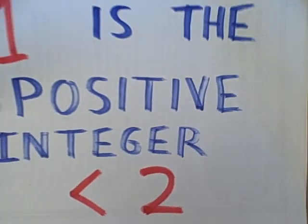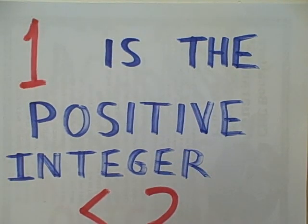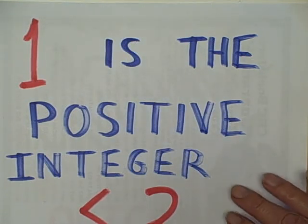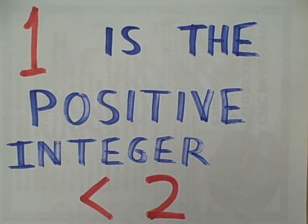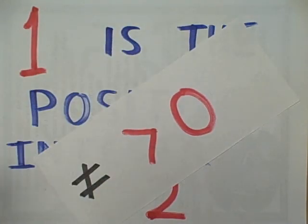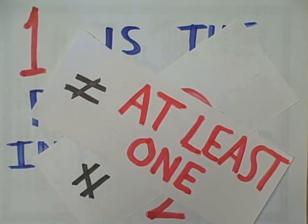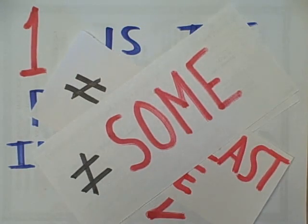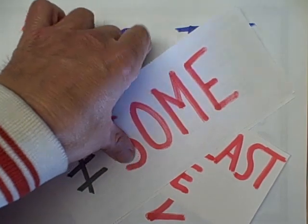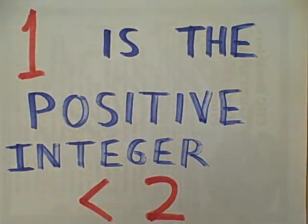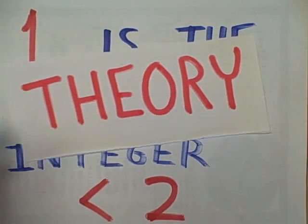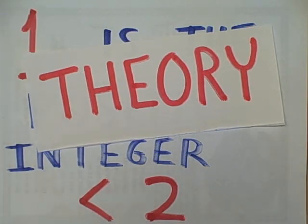Let's define the number one. One is the positive integer less than two. Notice what the definition of one is not — it's not any number greater than zero. One happens to be greater than zero, but not all numbers greater than zero are equal to one. One does not mean at least one; one does not mean some. Many times I ask you in a discussion board post to give me one theoretical explanation — that means give me one theory, such as Freud.